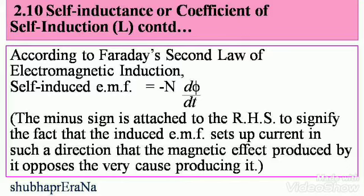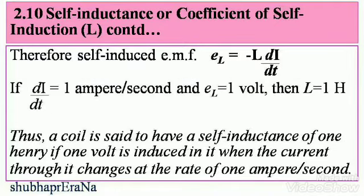According to Faraday's second law of electromagnetic induction, self-induced EMF = −N × dφ/dt. The minus sign on the right-hand side signifies that the induced EMF sets up current in such a direction that the magnetic effect produced by it opposes the very cause producing it — because it acts in the opposite direction. Therefore, self-induced EMF: EL = −L × dI/dt, since the self-induced EMF equals −N dφ/dt.